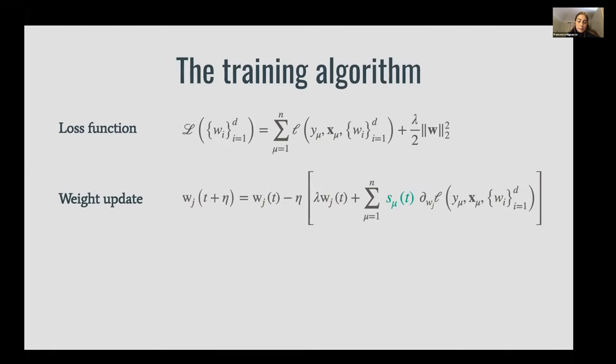At each discrete time step, the gradient is computed not on the full batch but on a random mini-batch. This mini-batch is selected by the binary variables s_mu that are time dependent. In practice, s_mu equals one if the sample mu is used to compute the gradient, and it's zero otherwise.